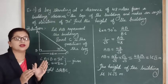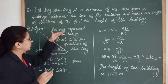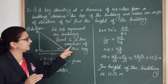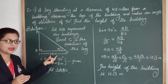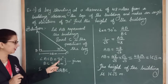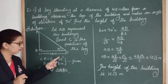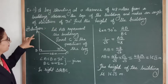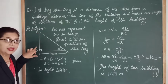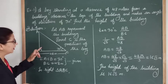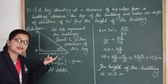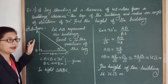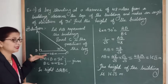After drawing the figure, we explain it: let AB represent the building, point C is the position of the boy. Given: angle ACB = 30°, BC = 48 meters. We need to find the height of the building, which means finding the length AB. Here theta is given, the adjacent side is given, and we need to find the opposite side. The trigonometric ratios involving opposite and adjacent sides are tan theta and cot theta.